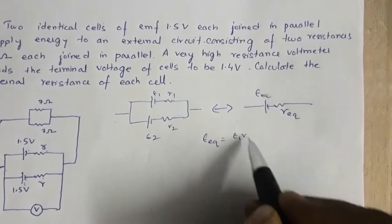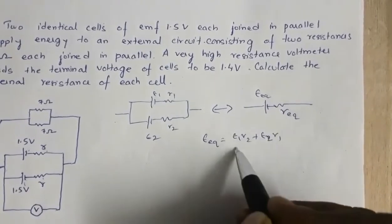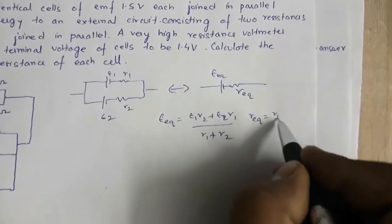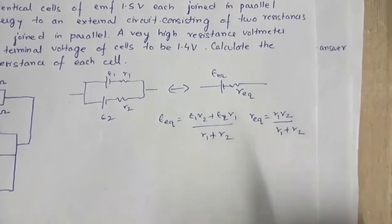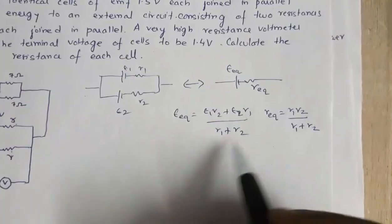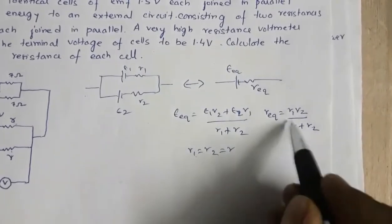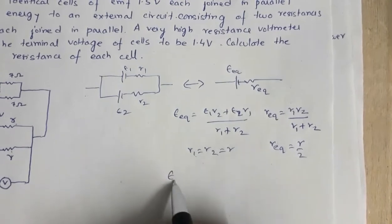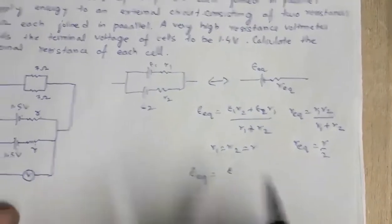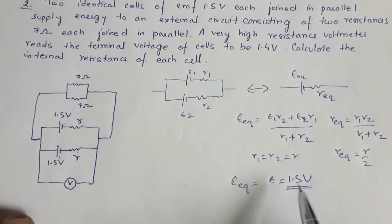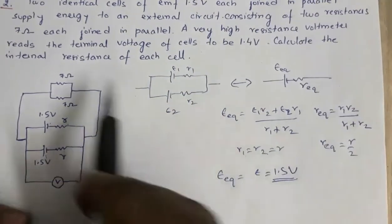For two identical cells in parallel: E_eq = E = 1.5 volt, and R_eq = r/2. The equivalent EMF of the cell combination is 1.5 volt. Now we need to find the internal resistance.